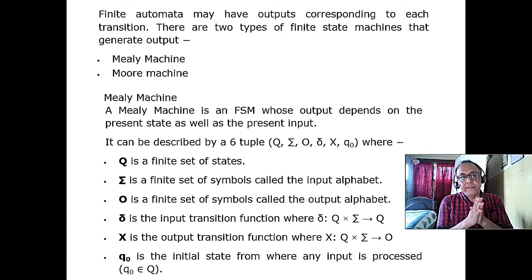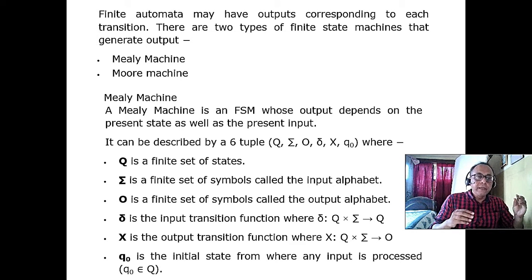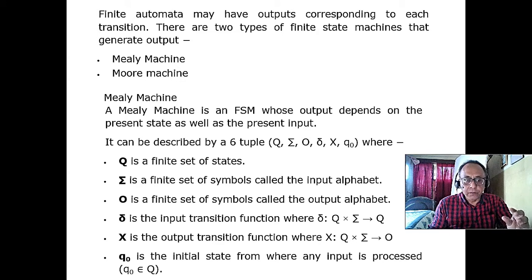We have already covered the finite automata. The finite automata that we have already taught is basically an acceptor or rejector. You give input a string, say 0, 1, 1, 0, or if the alphabet is A, B, then you give triple A, triple B, like this.